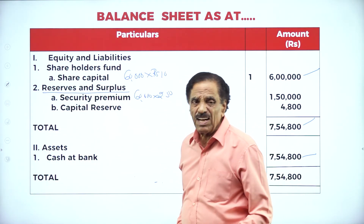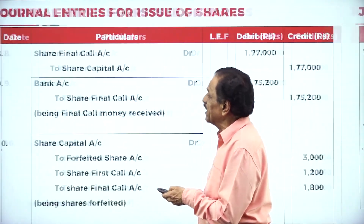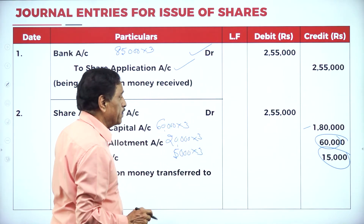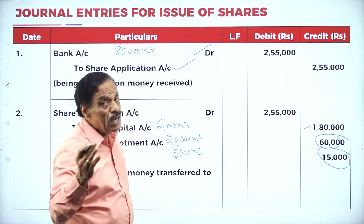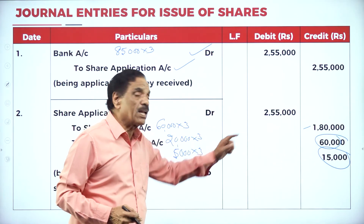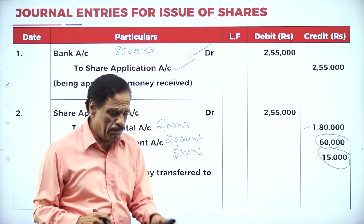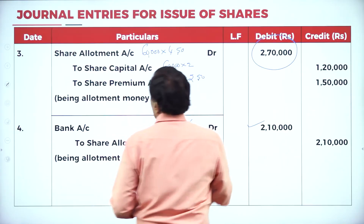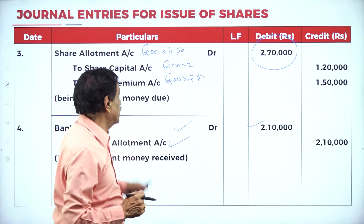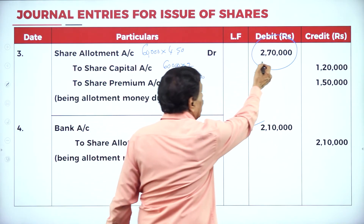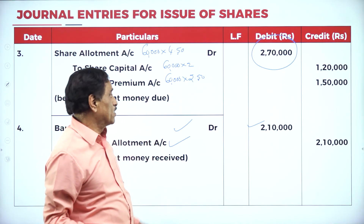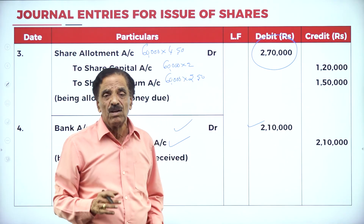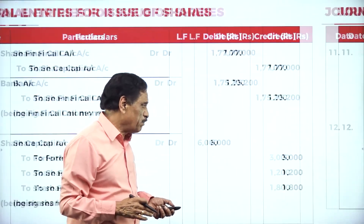If you have any doubt regarding the second entry: you received 2,55,000; actually require 1,80,000; refunded 5,000 applications × 3 = 15,000; adjusted to allotment account 60,000. For allotment: Share Allotment Account Dr. 2,70,000 to Share Capital and Share Premium. Already received in application 60,000; balance to receive 2,10,000. Remember this entry: 2,10,000. Once you remember, we can go with another problem in the next session.